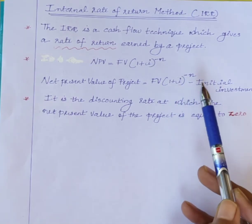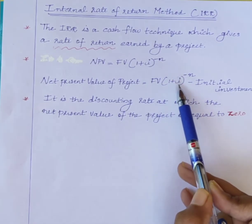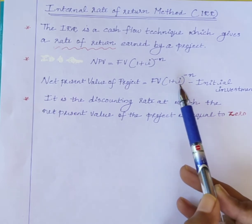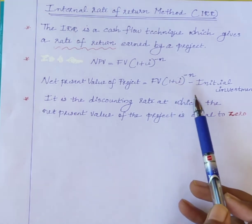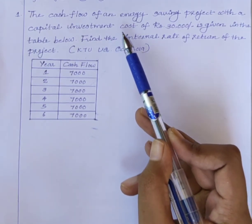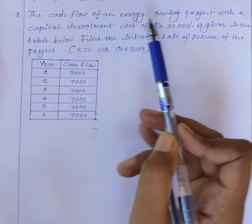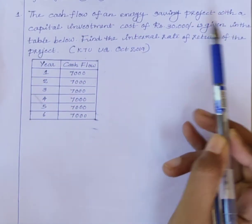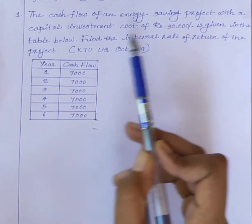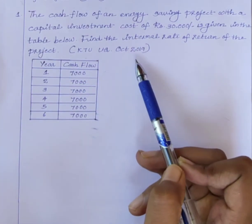There is no analytical method available to obtain the internal rate of return, I. So we have to use the trial and error method to find out the internal rate of return. Now we can use an example to understand the IRR method. The question is: the cash flow of an energy saving project with a capital investment cost of Rs. 30,000 is given in the table below. Find the internal rate of return of the project.